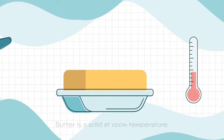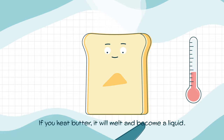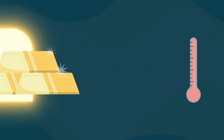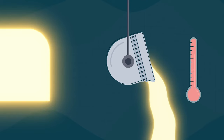Butter is a solid at room temperature. If you heat butter it will melt and become a liquid. Gold is a solid at room temperature. If you heat it to 1064 degrees celsius it will melt and become liquid gold.